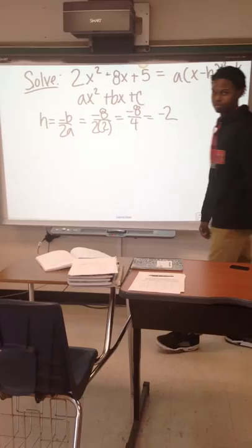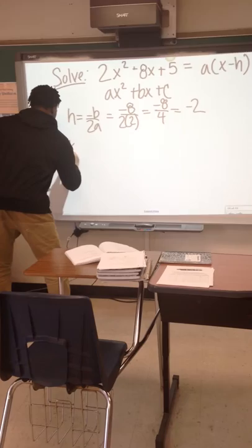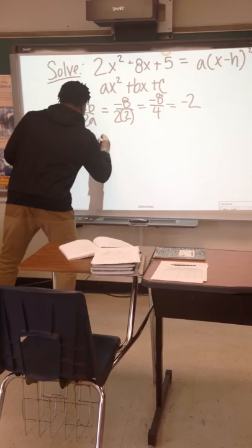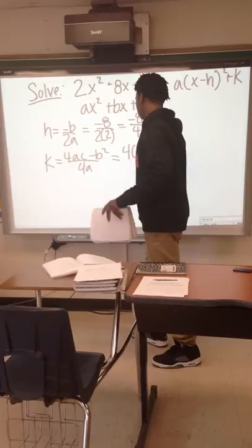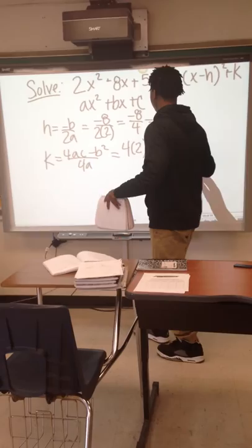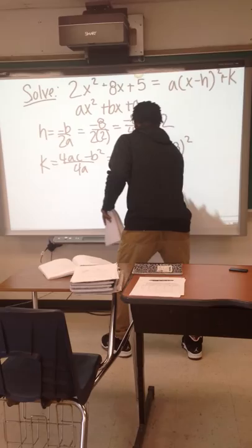To find k, you have 4ac - b² over 4a. A equals 2, c equals 5, and b equals 8 over 4a.